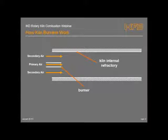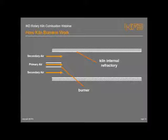Looking at the rotary kiln arrangement, there's a kiln shell with kiln refractory on the inside. You've got a burner with a pipe through which fuel and primary air - which is through the burner - is injected into the kiln. Then the secondary air, which is drawn from the outside environment, either from the hood, directly from the atmosphere, or through product coolers, enters the kiln and goes around the burner.